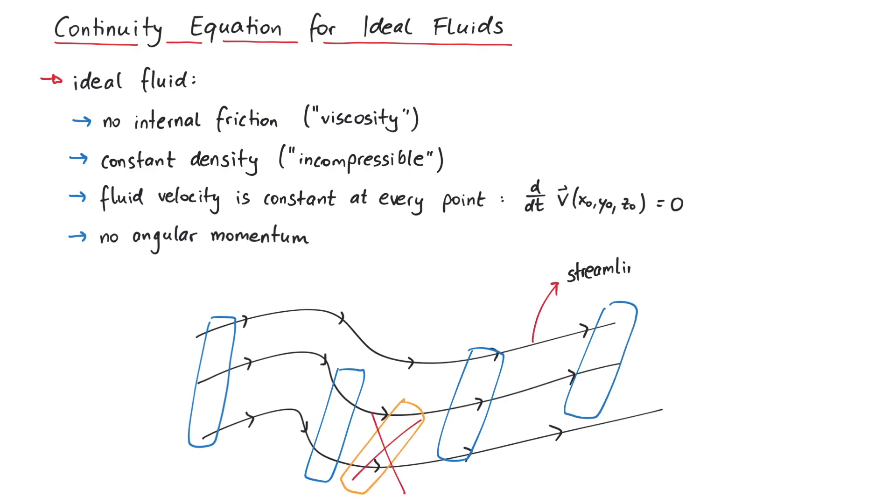These lines here are called streamlines, by the way, which represent another condition for an ideal fluid: laminar flow. In other words, there is no turbulence in an ideal fluid.